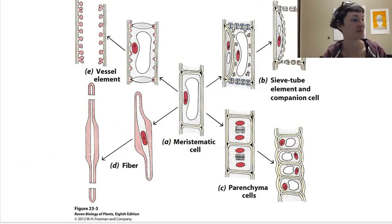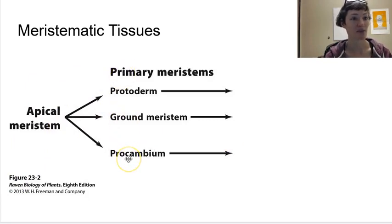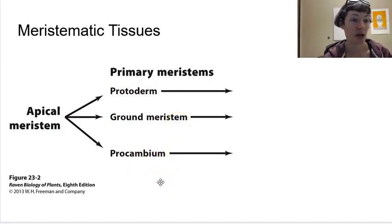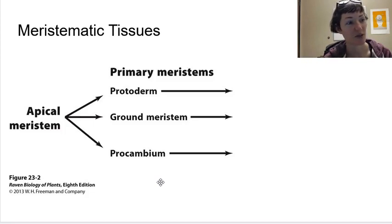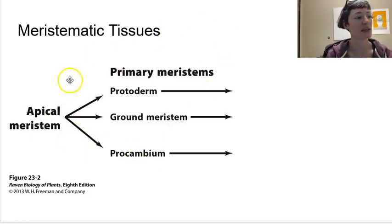Of our meristematic tissues, we'll always have this apical meristem, and then we'll have the primary meristems. This is the developmental history of a plant. Of the primary meristems, we'll have three, and this is the same in the root and the shoot: the protoderm, the ground meristem, and the procambium. These will always be our primary meristems in both the shoot and the root system. How things develop from here — what tissues they're responsible for making and what secondary meristems come out of that — will be different in the root and shoot, and also different in monocots and eudicots.